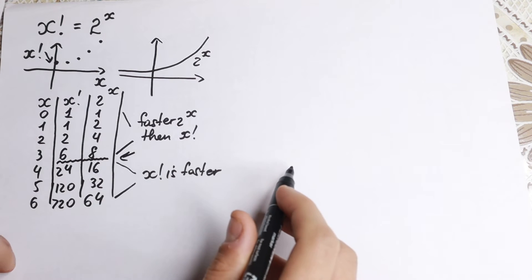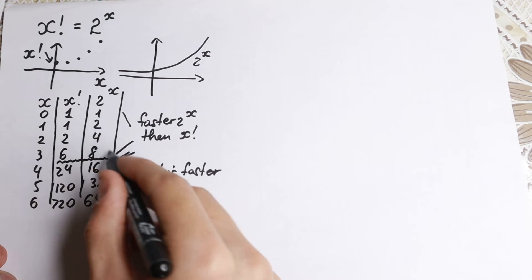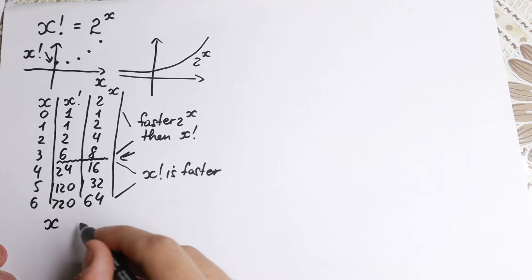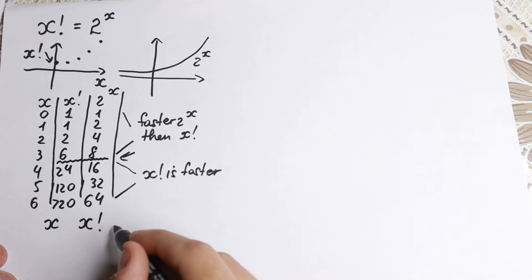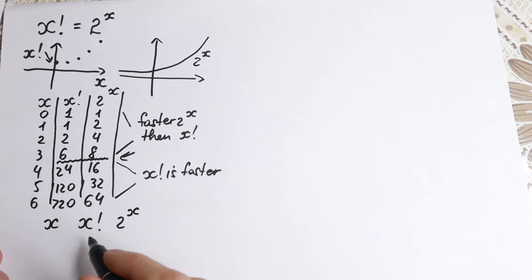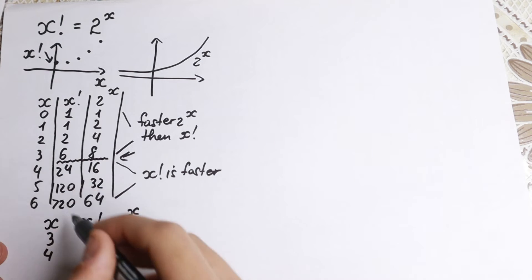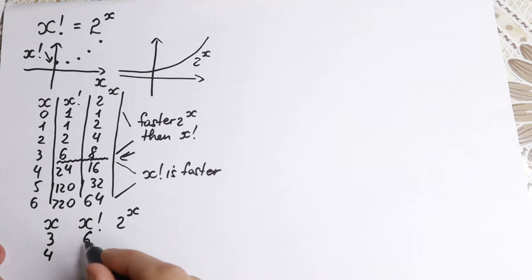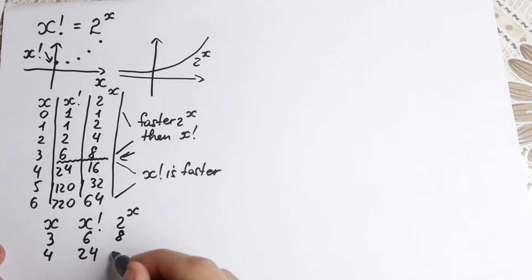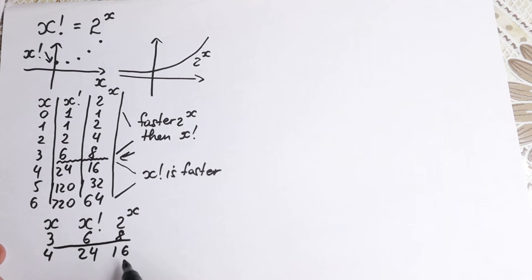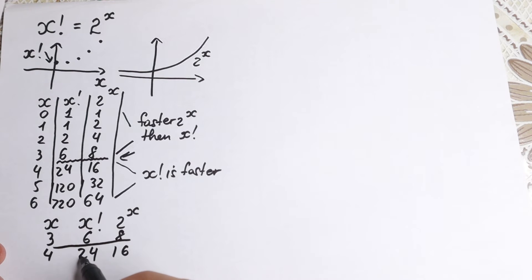Let's rewrite this step right here. We have x=3 giving x factorial=6 and 2 to the x=8, while x=4 gives x factorial=24 and 2 to the x=16. As you can see, they intersect between 3 and 4 — this function grows faster before that point, and after that step, the other one grows faster. So right here we will have a point of intersection.